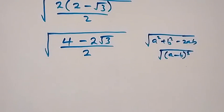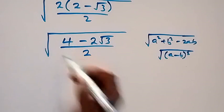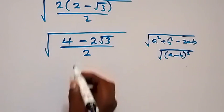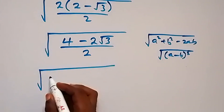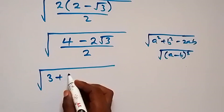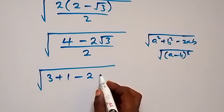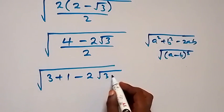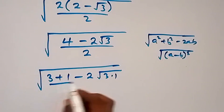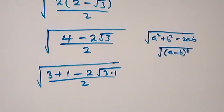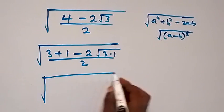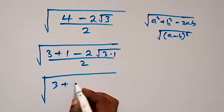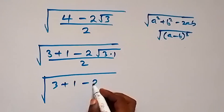And that means let's separate 4 here as 3 plus 1. So we have square root of, here we have this as 3 plus 1, then minus 2 root 3 times 1 here, then over 2. Which we can now write as square root of 3 plus 1, then minus 2 root 3 times root 1, then over 2.